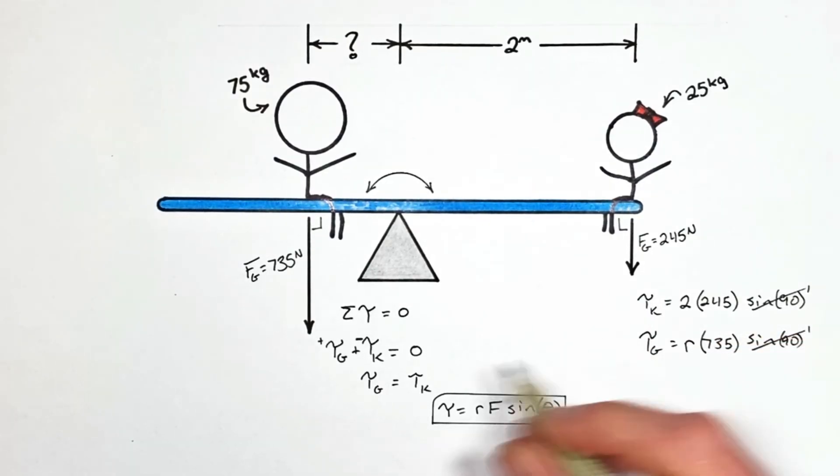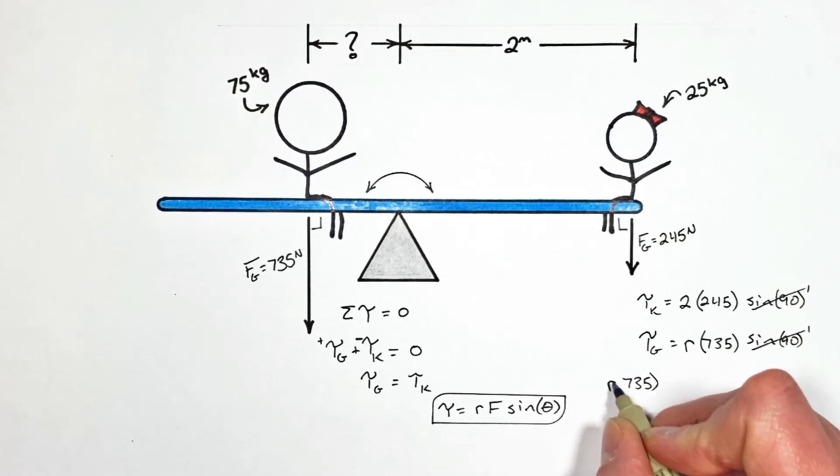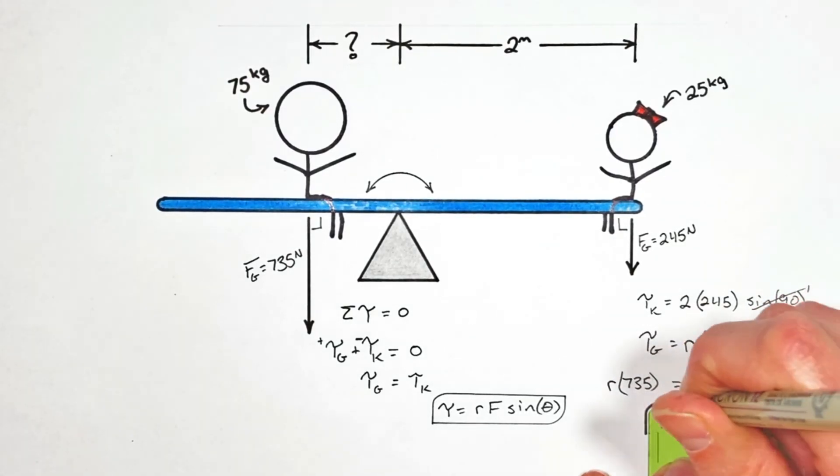So plugging these two values into our little equation over here, we're going to have the torque by the grown-up is equal to the torque by the kid. And solving for the radius, we find if the grown-up sits 2 thirds of a meter from the pivot point, this whole teeter-totter will be balanced.